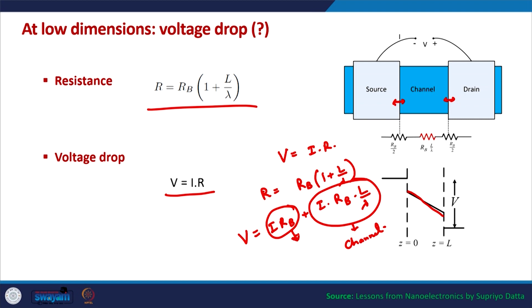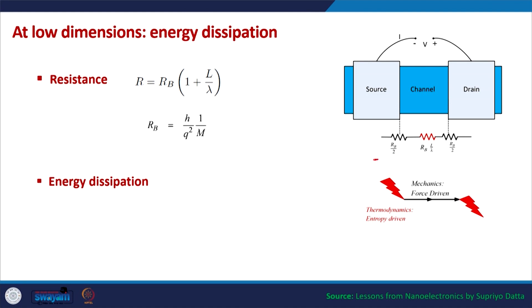Half of the contact voltage drop happens on the source contact and half on the drain contact. The contacts are extremely crucial especially in ballistic transport and nanoscale devices. Similarly, power dissipation can also be divided into two parts — one because of the length-independent resistance and one because of the length-dependent resistance. In a ballistic conductor, the entire power dissipation happens at the contacts.